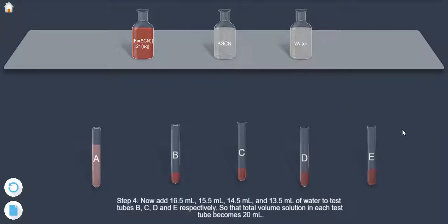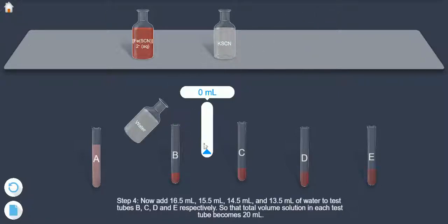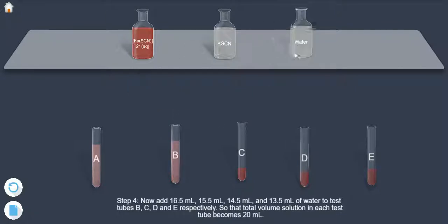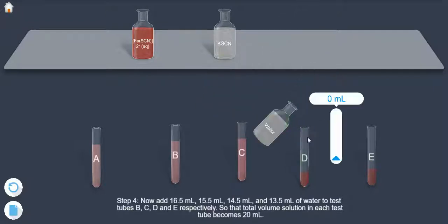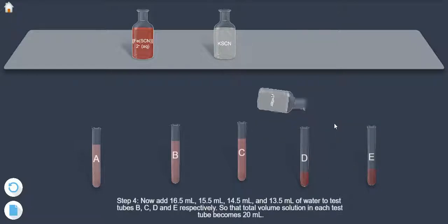Step 4. Now add 16.5 ml, 15.5 ml, 14.5 ml and 13.5 ml of water to test tubes B, C, D and E respectively, so that total volume solution in each test tube becomes 20 ml.